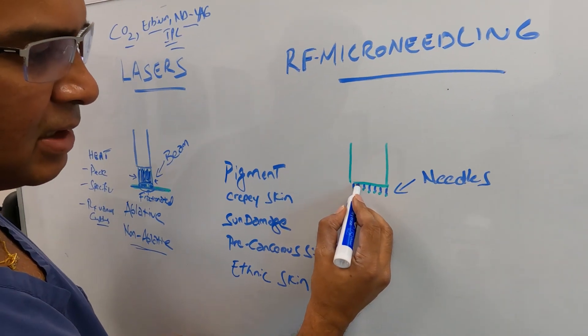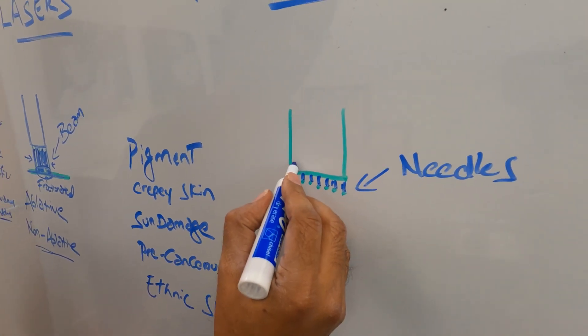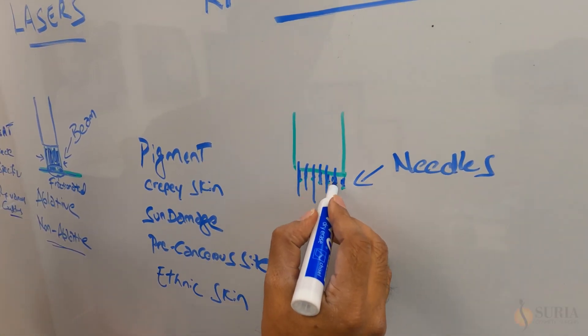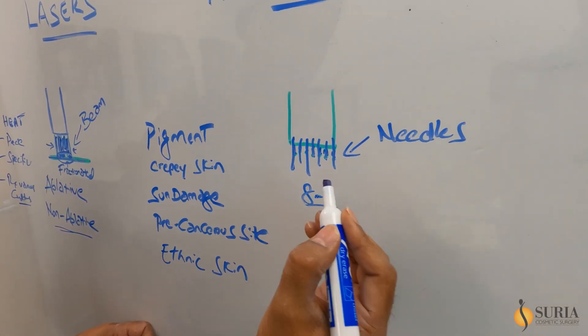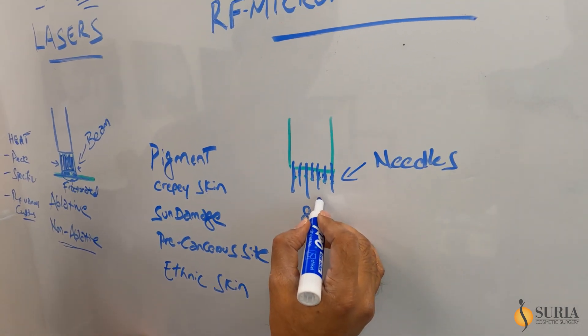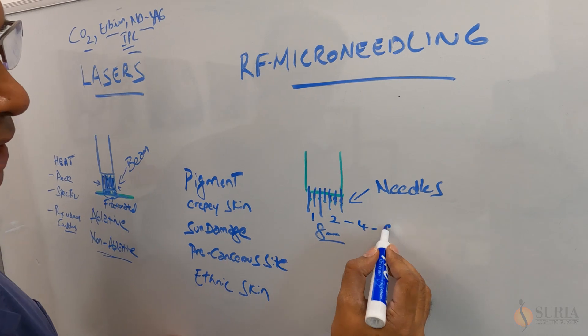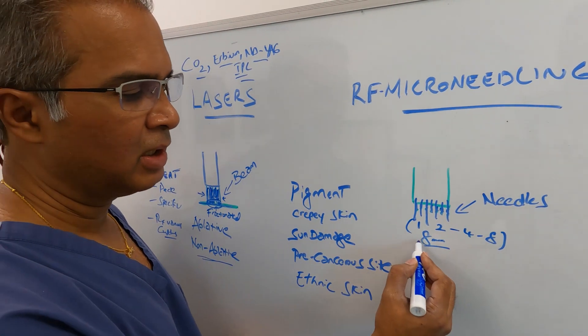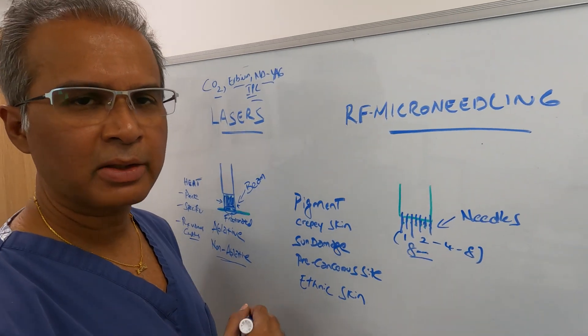It has basically needles. These are all needles. And these needles come down to various lengths depending on the technology. Some of them go deeper to eight millimeters almost maybe. Some of them go two, three, four, so anywhere from one all the way to eight millimeters they can go to at the present moment.